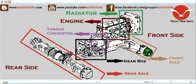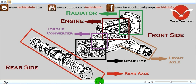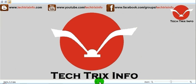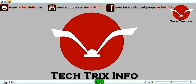So this is the powertrain — the chain through which power is transmitted towards the rear axle and rear wheels. We have the engine, then the torque converter, then the gearbox, and finally the rear axle and the front axle. I believe you now have an idea about the powertrain of an automobile. For more engineering tutorials, visit my blog at www.tectricksinfo.com or my YouTube channel. Thanks for watching.